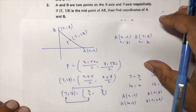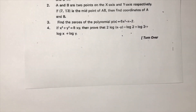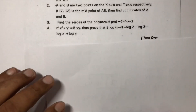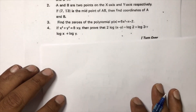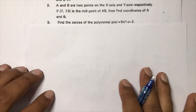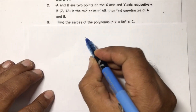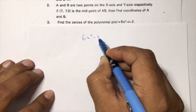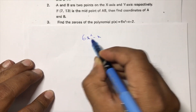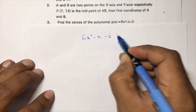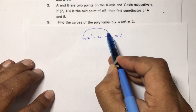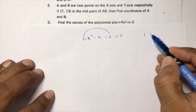Next: find the zeros of the polynomial 6x² − x − 2. Set 6x² − x − 2 = 0. Multiply 6 × 2 = 12, so we need factors of 12.